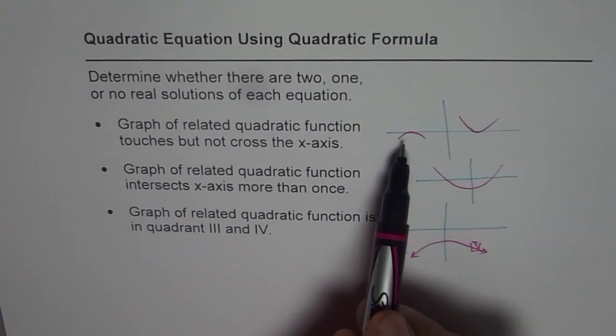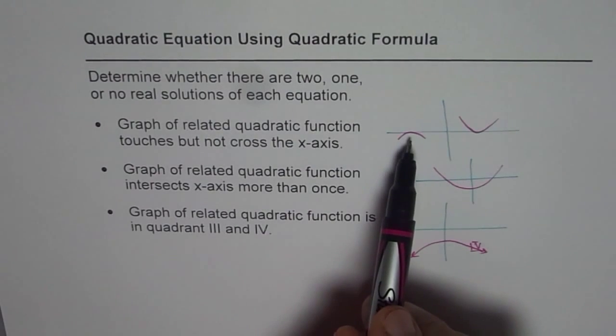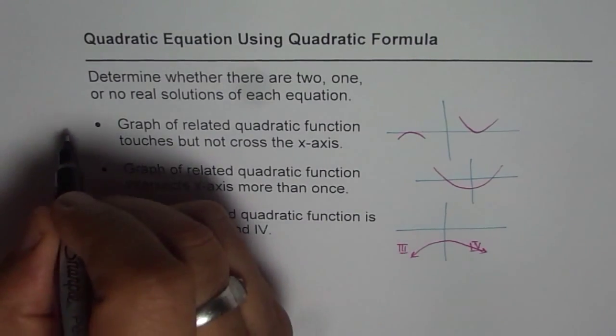So if the graph just touches and does not cross, then as you can see we could have only one real solution. So for this one the answer is one.